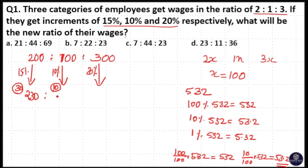So the same way, 10 percentage of 100 is 10, so 100 plus 10 is 110. 20 percentage of 300 is 60. Here 10 percentage is 30, then 1 percentage is 3, that means 20 percentage is 60. So 300 plus 60 is 360.